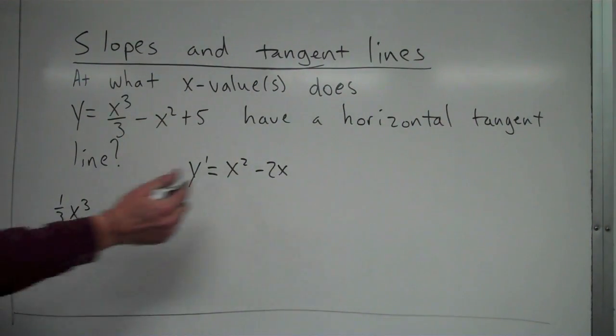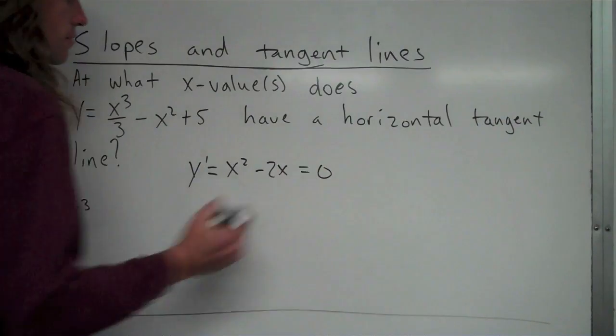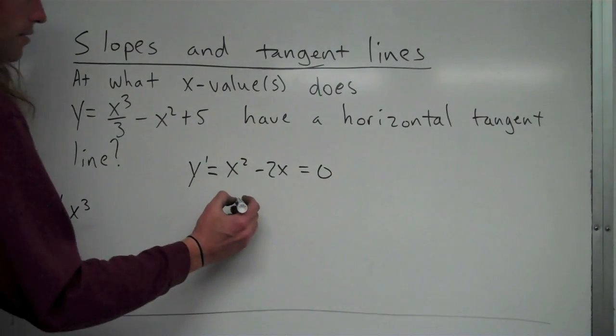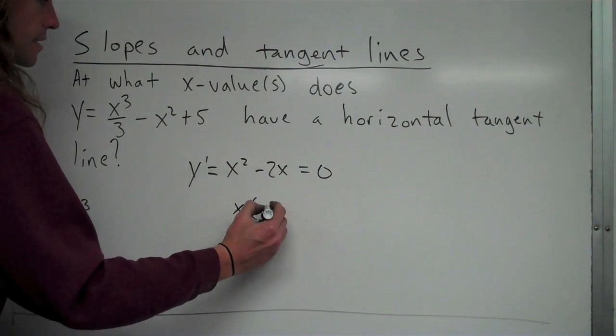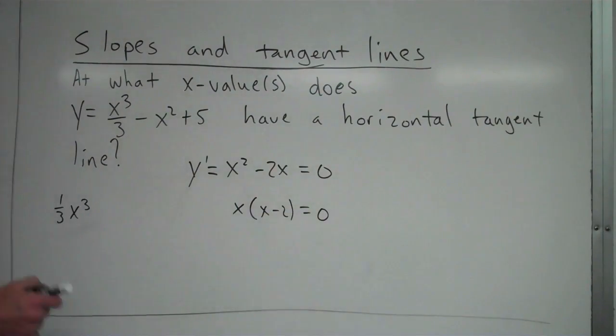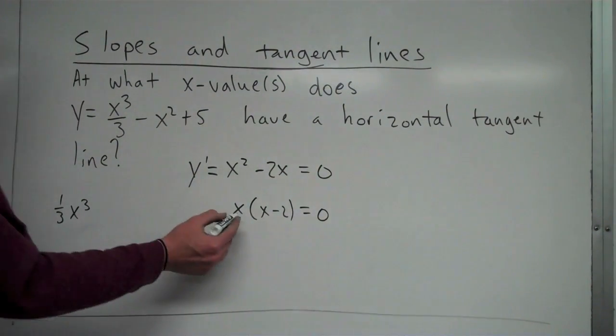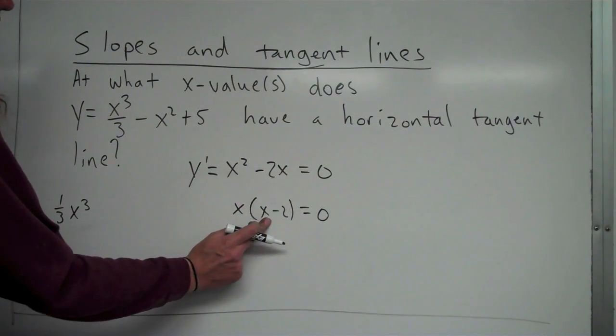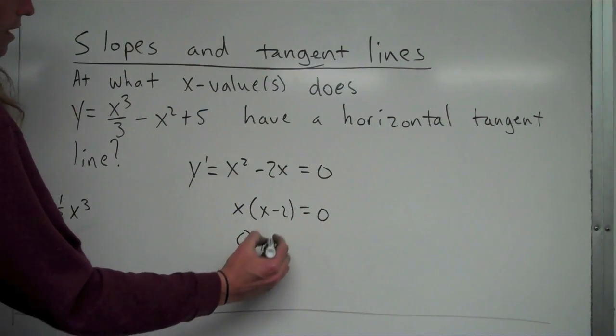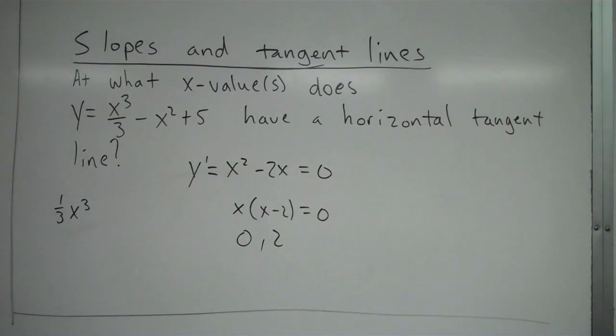So I need to see where does this equal 0. This is the derivative. Let me go and factor out an x to get x times x minus 2 equal to 0 like that. And I have there are two places, when x equals 0 and when x equals 2. So 0 and 2, those are the two places where this function has a horizontal tangent line, at x equals 0 and at x equals 2.